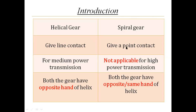When the contact between two gears is a point contact, these gears are not applicable for transmitting high power. Due to the point contact between two spiral gears, these gears are not used for high power transmission. So when load carrying capacity required is less, spiral gears are used.